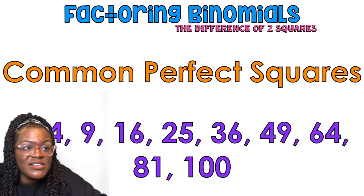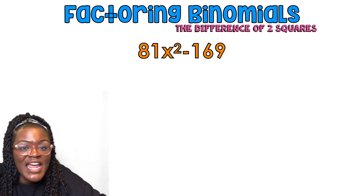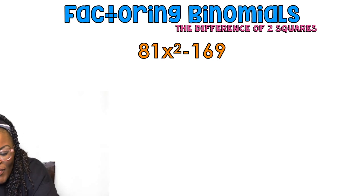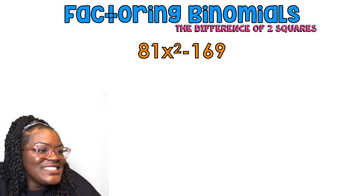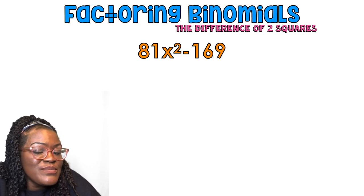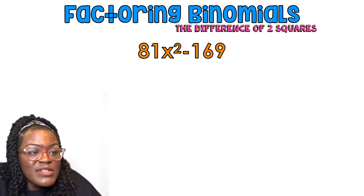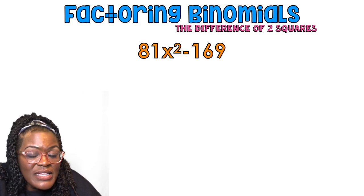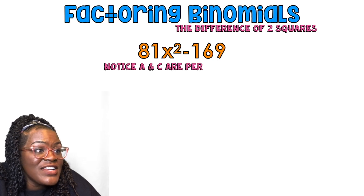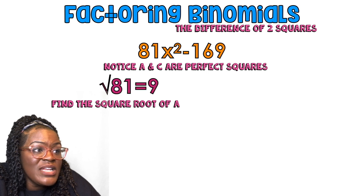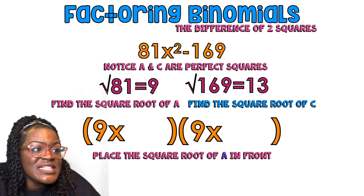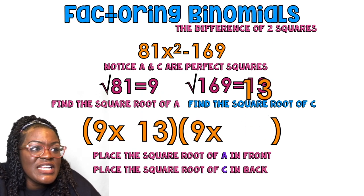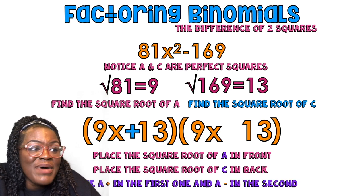Example: 81x² minus 169. The square root of 169 is 13, the square root of 81 is 9. There's a minus in the middle, 81 is a perfect square, 169 is a perfect square, and there are only two terms — that's the difference of two squares. Put the square roots in their positions: 9x and 13. Put a plus in one and a minus in the other. That's it — finito.